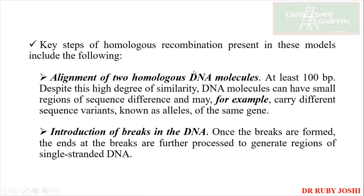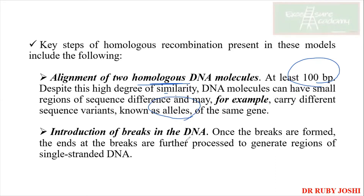There are a few important steps for homologous recombination. The first one is alignment of two homologous DNA molecules. When we talk about homologous recombination, it has to be between homologous DNA molecules — meaning at least 100 base pairs should match. They can have small regions of sequence difference and may carry different sequence variants, so they are known as alleles.